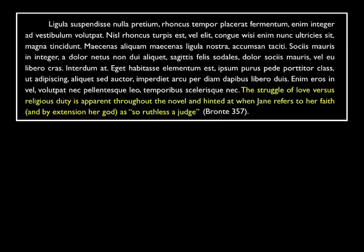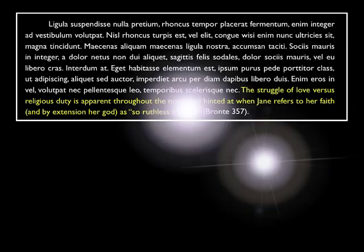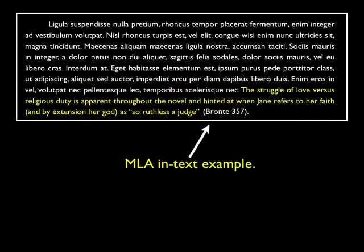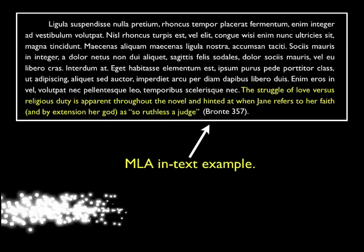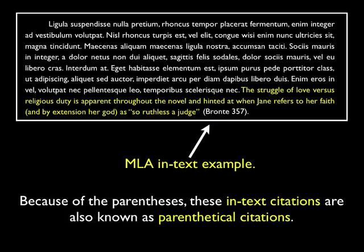She provides proper credit by citing the author and the page number where those words exist. This in-text citation gives partial credit to the overall source. Note that because the credit exists within the text, this part of the citation process is known as in-text citing.